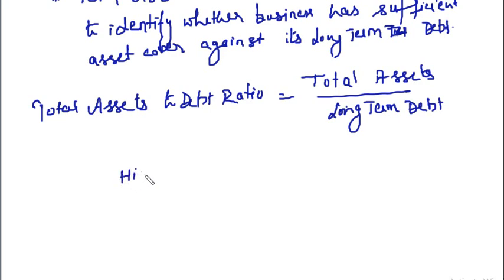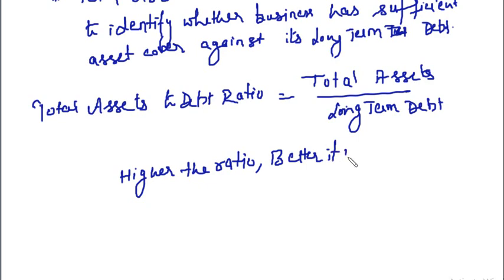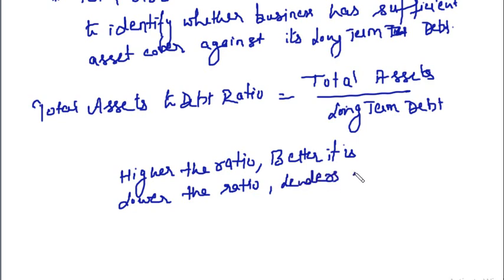Higher the ratio, better it is. If the ratio is lower, that means debt is more than the total assets, then the lenders are at risk. If the business doesn't have the appropriate value of assets against the long-term debts, then the persons who have advanced these debts are at a risk.